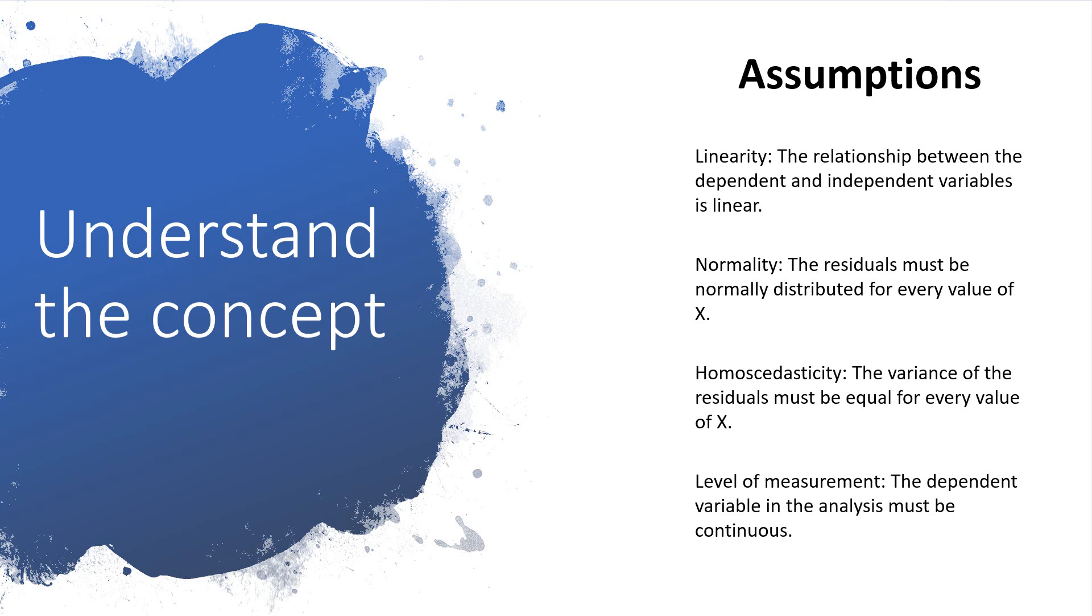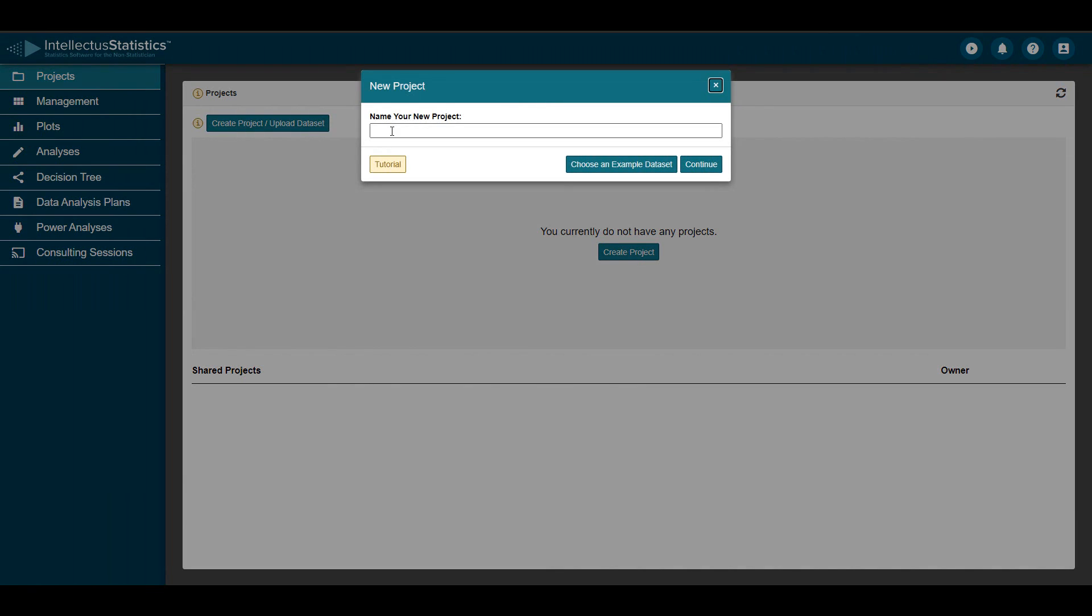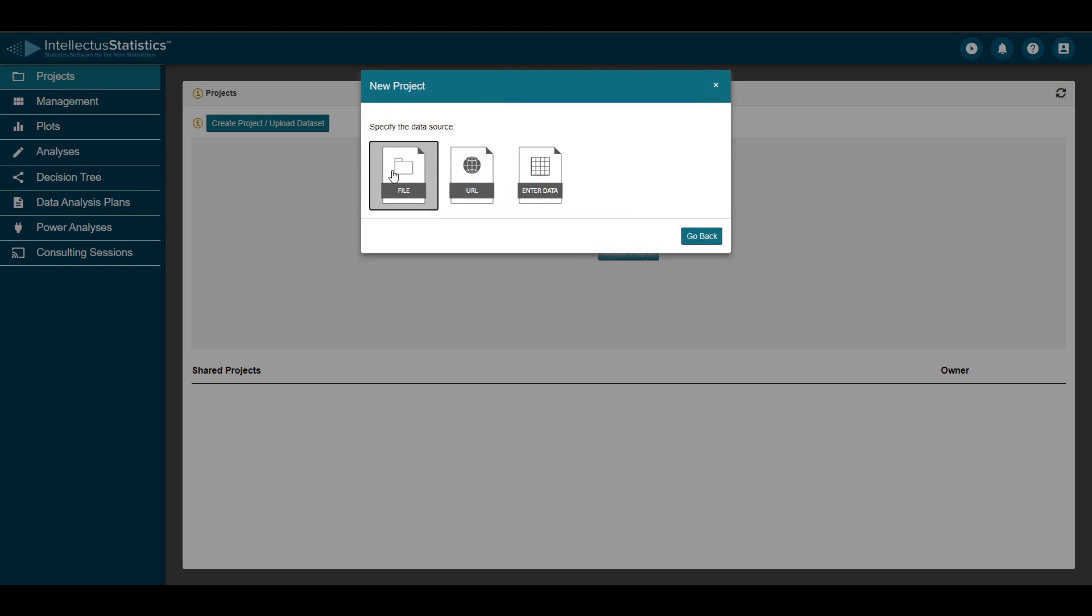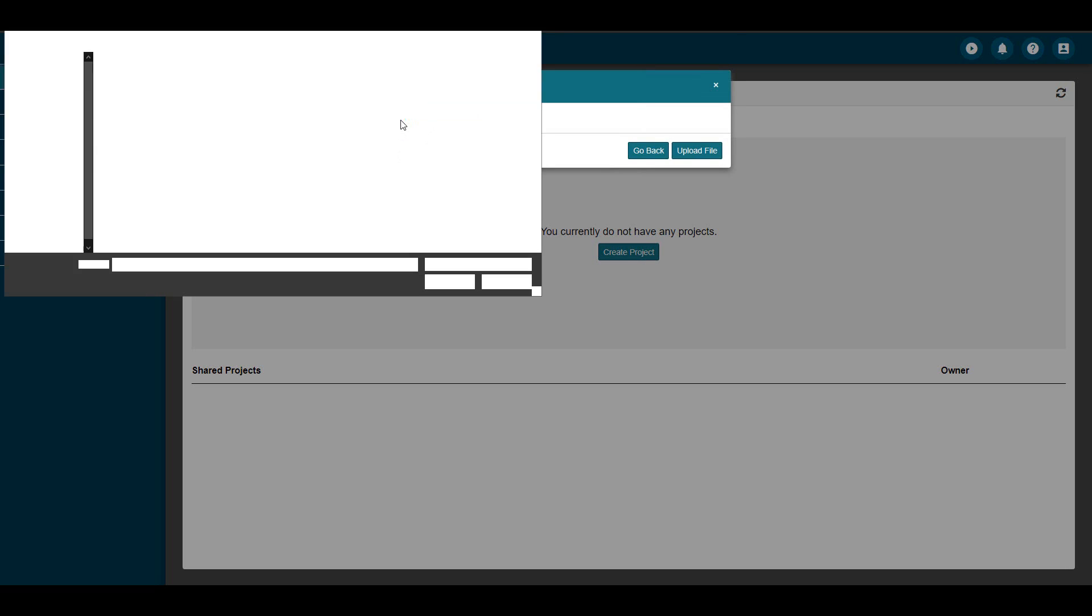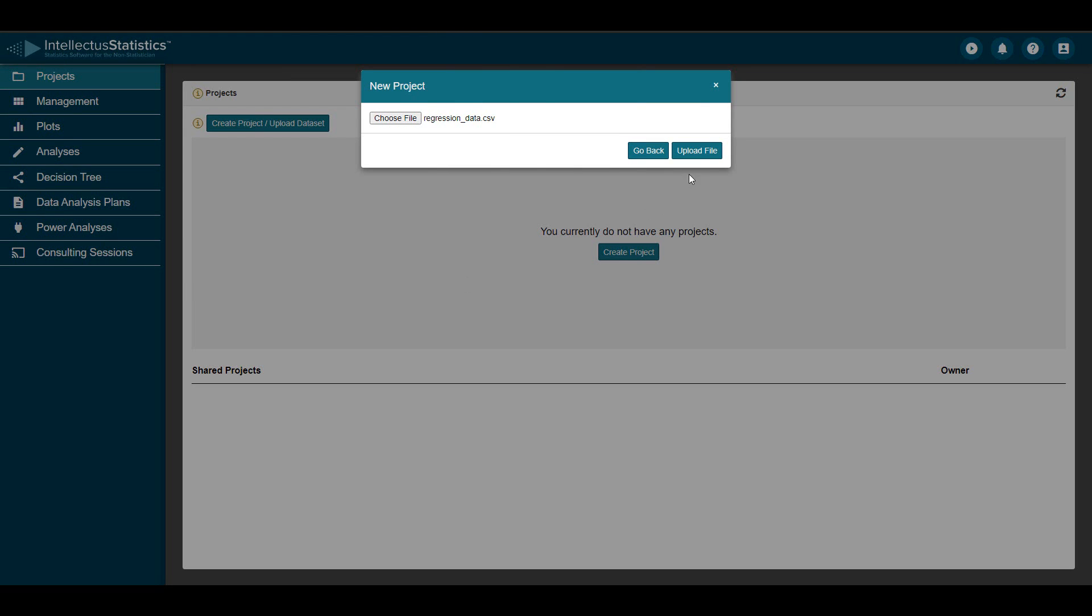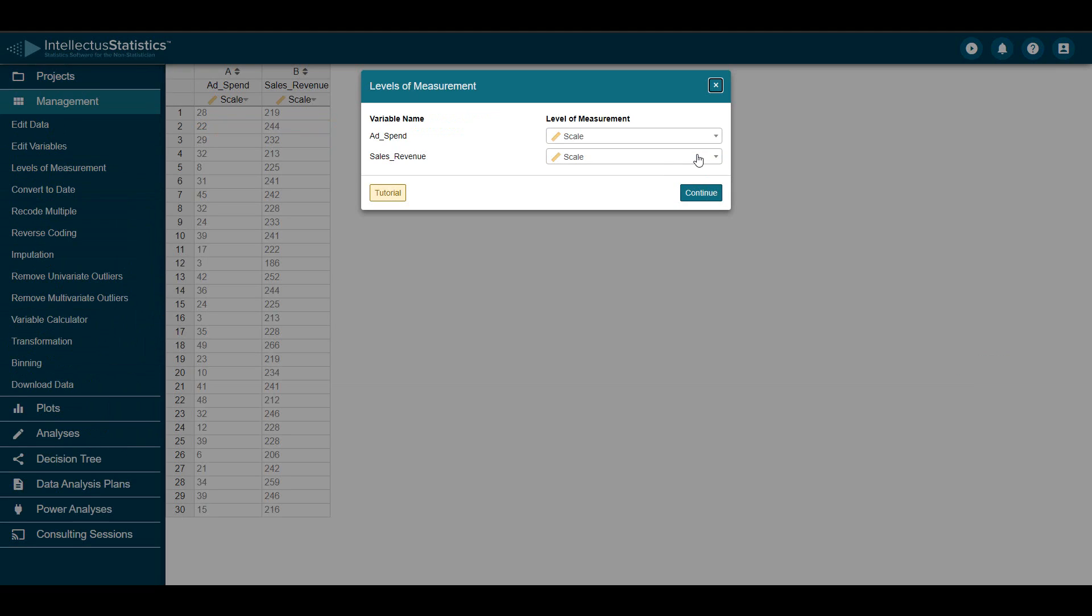Now that you understand the concepts, let's conduct our regression. First, we'll upload our data. Before we do anything, we want to verify that all of our variables have the correct level of measurement. In regression, the dependent variable must have the scale level of measurement. In our dataset, the dependent variable is sales revenue measured in dollars, which meets the level of measurement requirement. The independent variable is advertising spend, which is also a scale variable. Now that we have validated the levels of measurement, we can proceed to conduct the regression analysis.